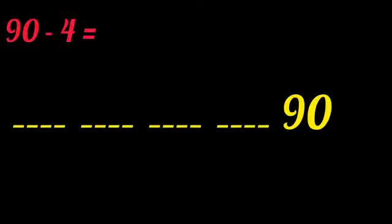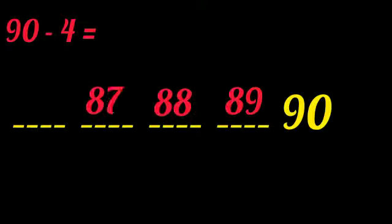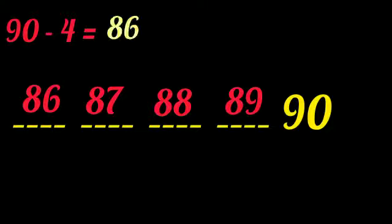90, then 89, 88, 87, 86. So, we can say 90 minus 4 is 86.